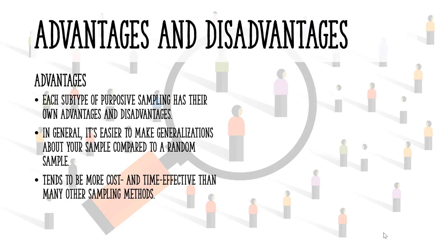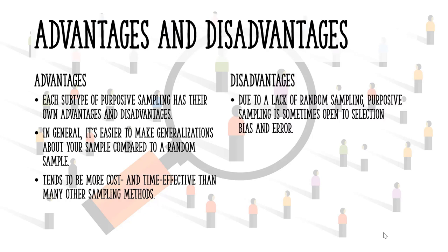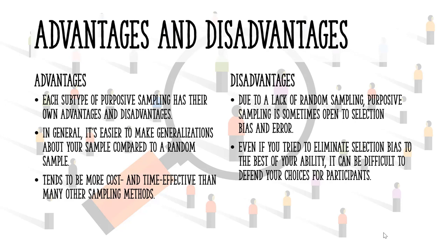It does have a few disadvantages. Purposive sampling is sometimes called a judgmental sample. That's a bit of a misnomer because there's no intended bias in purposive sampling. However, due to a lack of random sampling, purposive sampling is sometimes open to selection bias and error. Even if you try to eliminate selection bias to the best of your ability, it can be very difficult to defend your choices for participants. Readers of your study may doubt if the sample was representative.